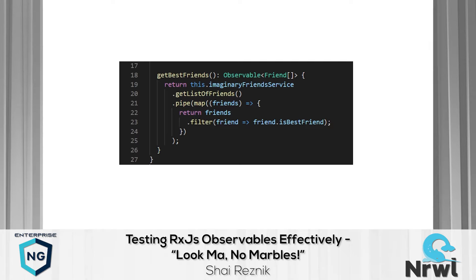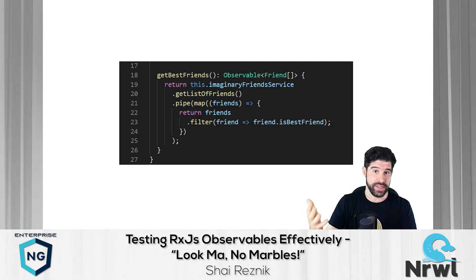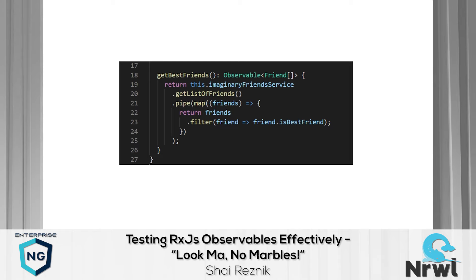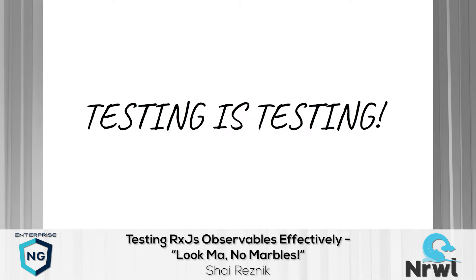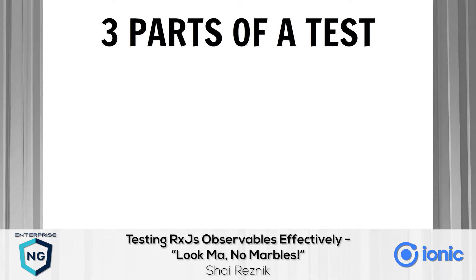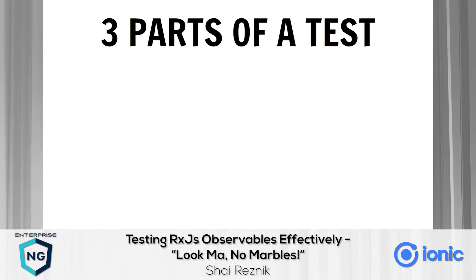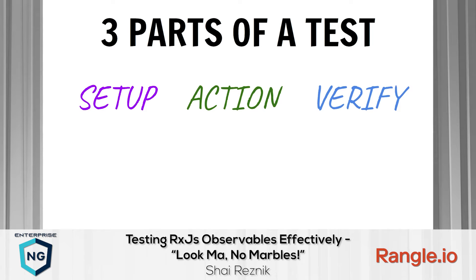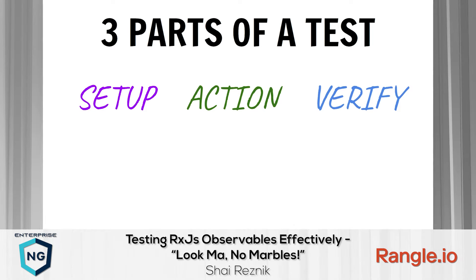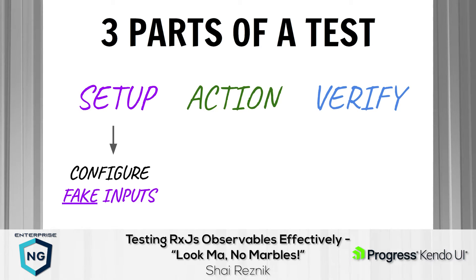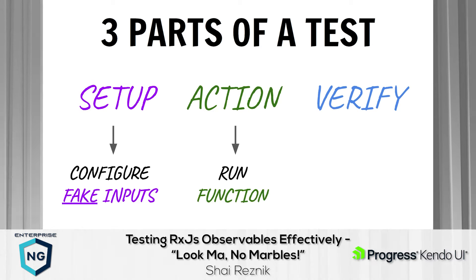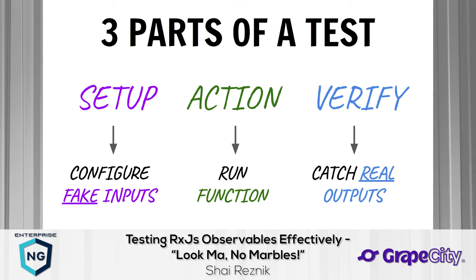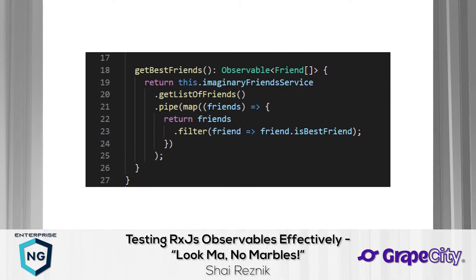Looking at this code — where do I even start? I thought: let's apply the same principles I've been applying in other tests and see if they apply to observable testing. They do, because testing is testing is testing. One of these principles is the three parts of a test: Setup, Action, and Verify. In the setup phase we configure the fake inputs; in the action we run the function or method; in the verify stage we catch real outputs and compare them to expected results.